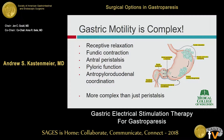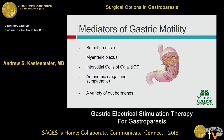Gastric motility is pretty complex, and there's a variety of factors — not just peristalsis within the antrum — that are going to affect gastric emptying. There's receptive relaxation, fundic contraction, pyloric function, and it's way more complex than just peristalsis. It's mediated by a variety of factors: smooth muscle, the myenteric plexus, the interstitial cells, autonomic inputs, and a variety of gut hormones that haven't been fully worked out yet.